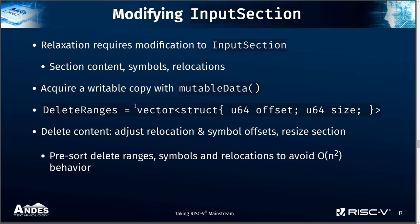In LLD, the input sections by default are memory-mapped directly from the input files. So we had to add a mutable data function to make a writable copy of the content. The next thing is we had to add a new function to delete bytes from the input sections, which will move the section content and adjust relocation and symbol offsets, then reduce the size of the section. In the implementation, we pre-sort the offsets of all the relevant symbols and relocations to ensure that the execution works in linear time.